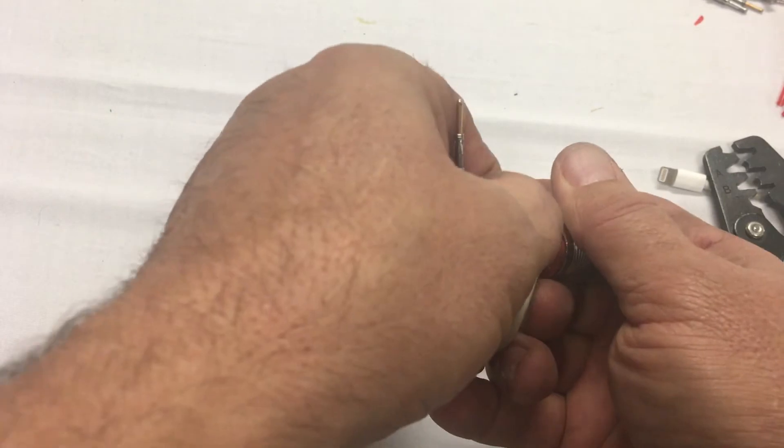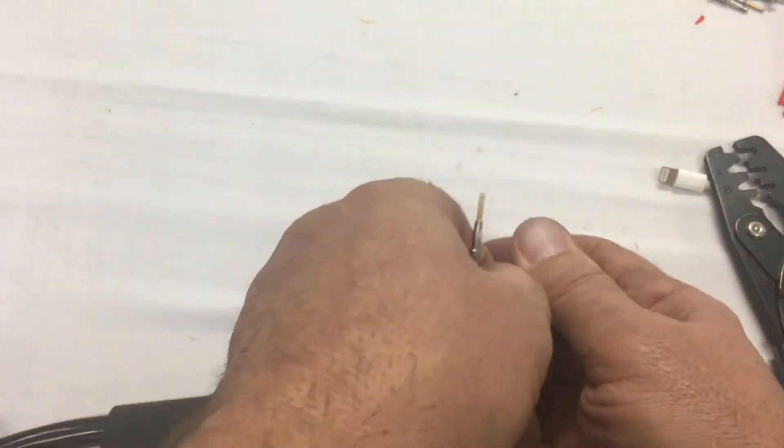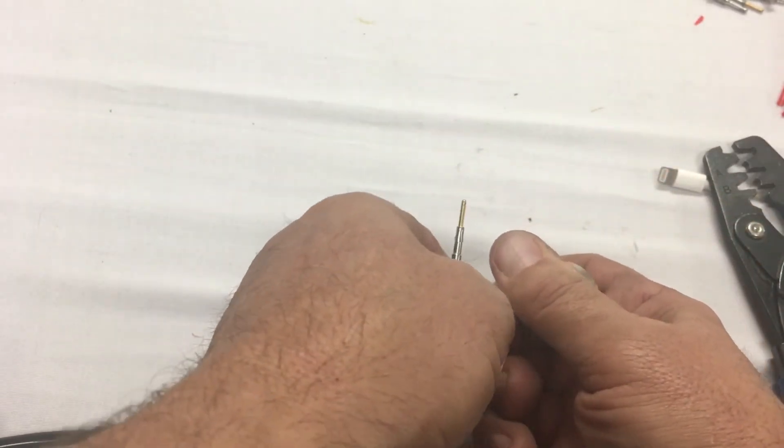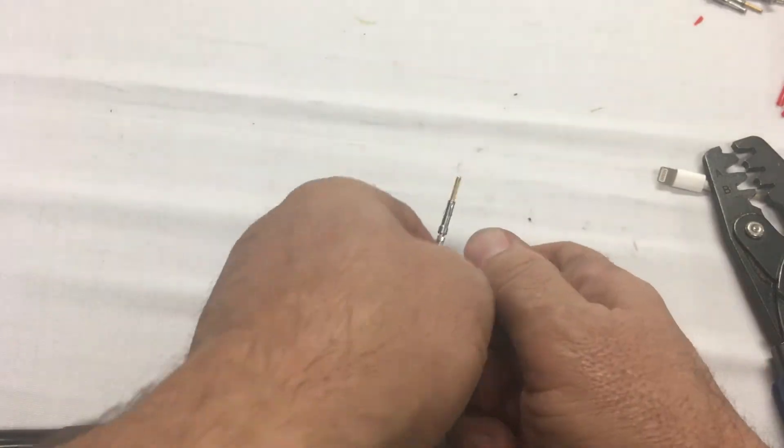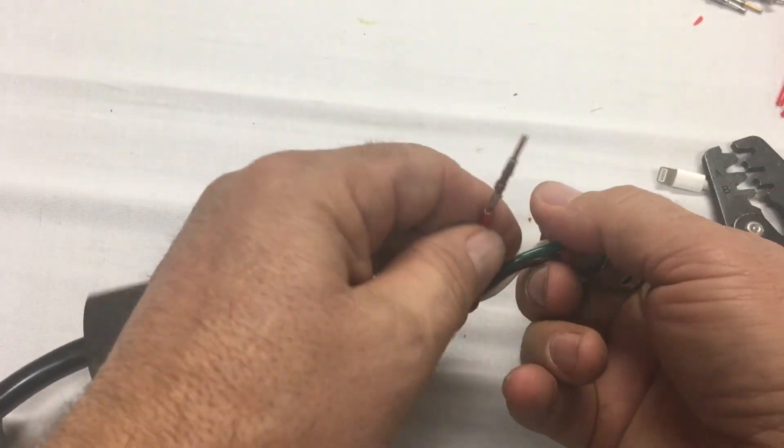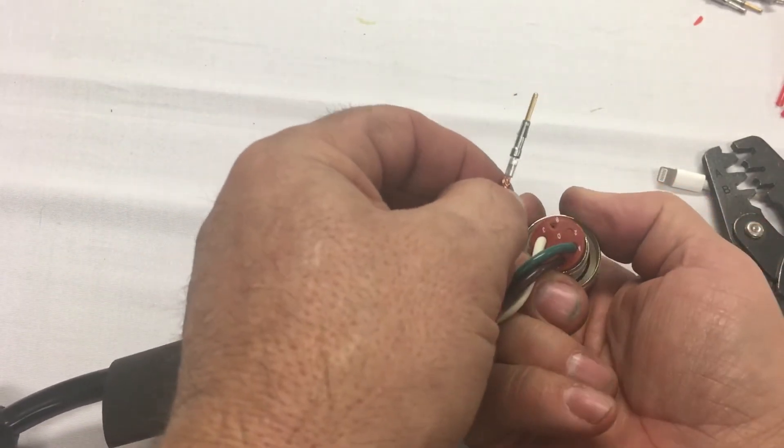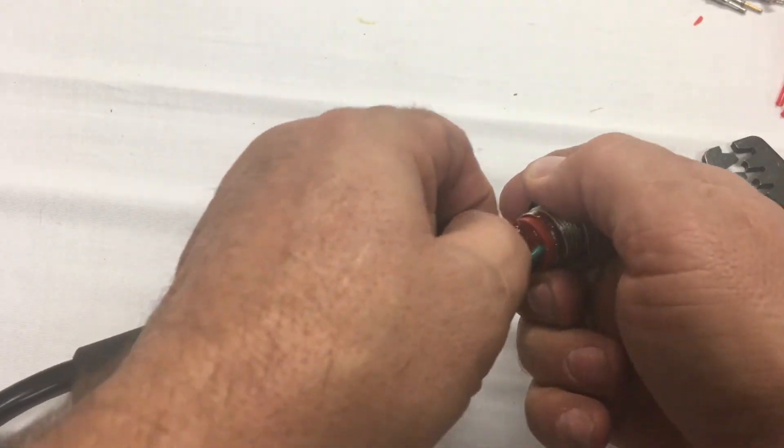And then I've got A is green. Push that through until it clicks. And B is red. Just push it through until it clicks.